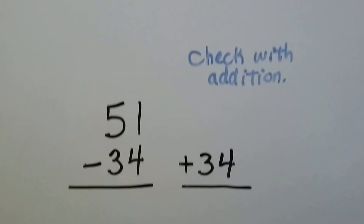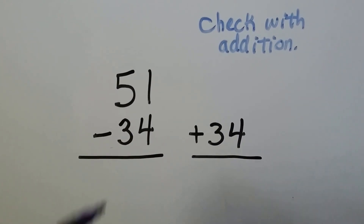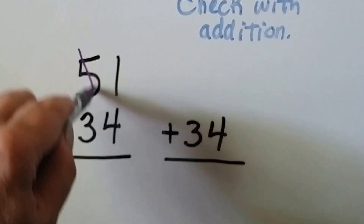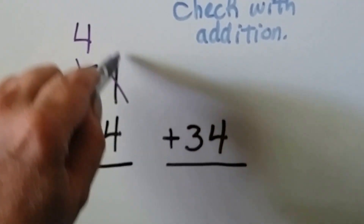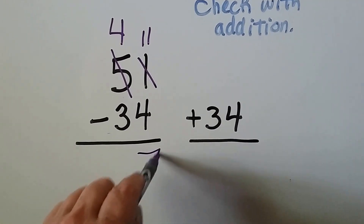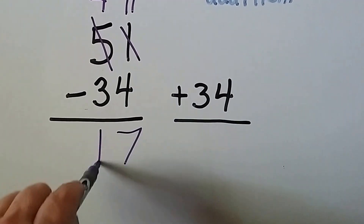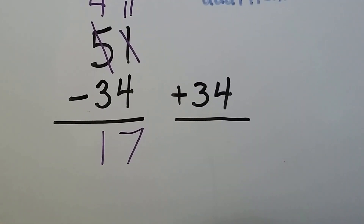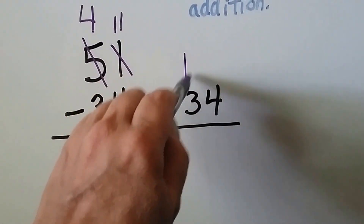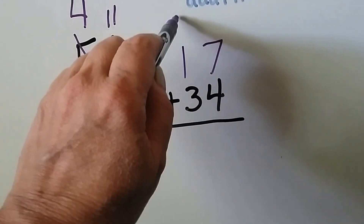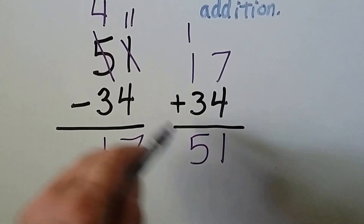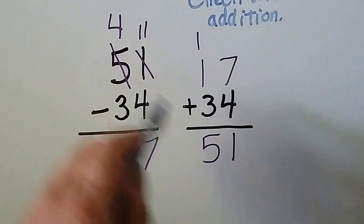Let's try it again. 51 minus 34. We look at the ones place — this 4 is larger than the 1, so we do need to regroup. The 5 is going to become a 4, and the 1 is going to become an 11. 11 minus 4 is 7, and 4 minus 3 is 1. Now we add this difference to this subtrahend: 7 plus 4 is 11. We regroup the 1 and put the 1 down. 1 plus 3 plus 1 is 51 — our original minuend, so we know we did it correctly.